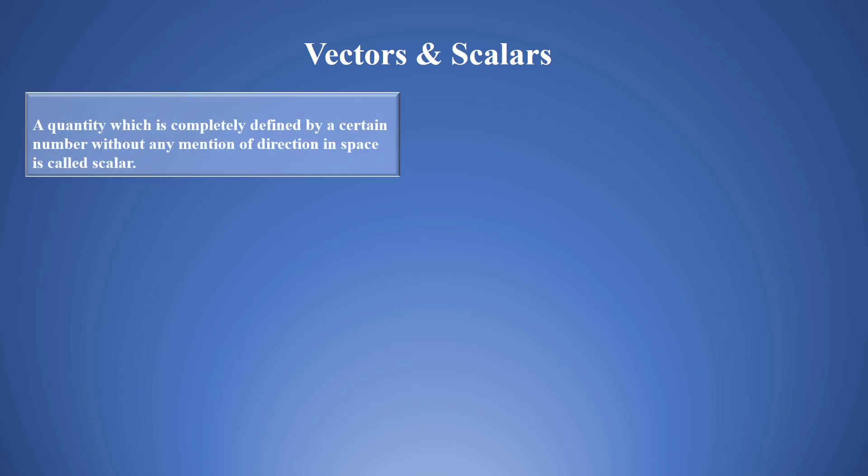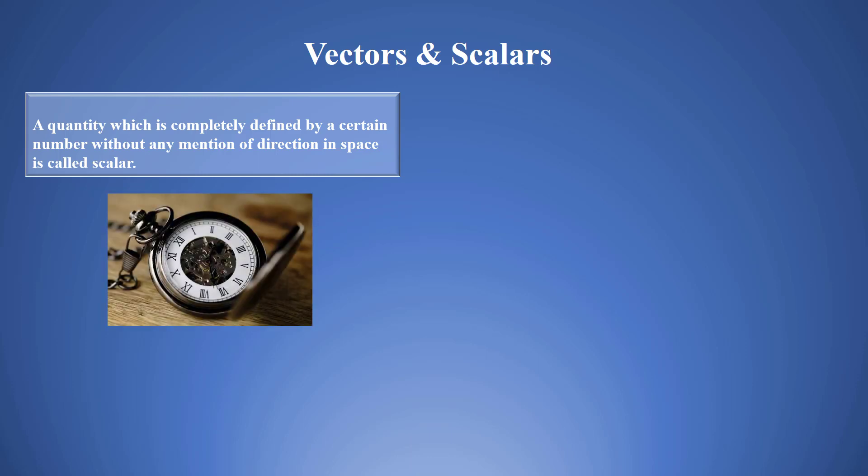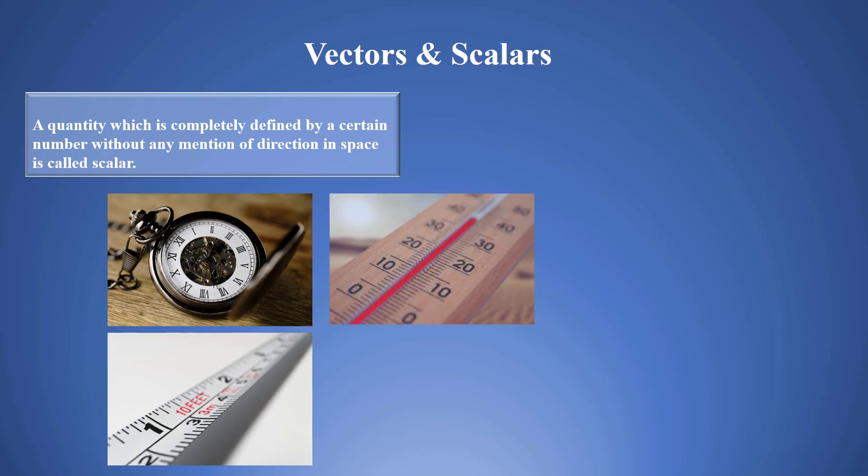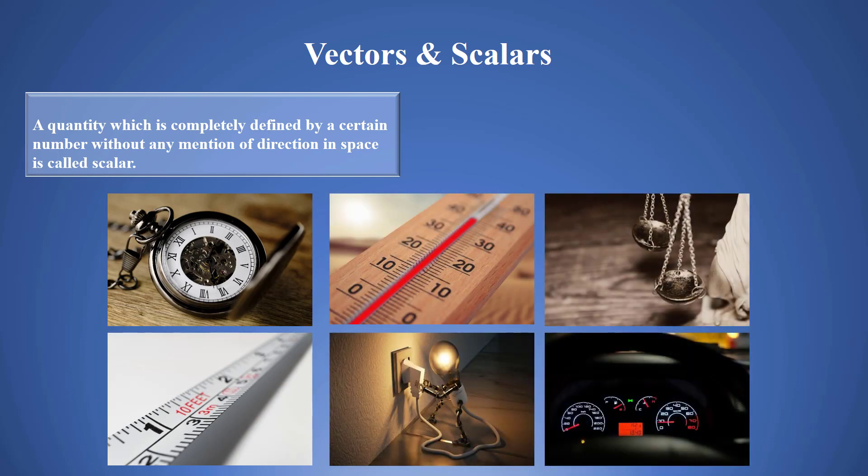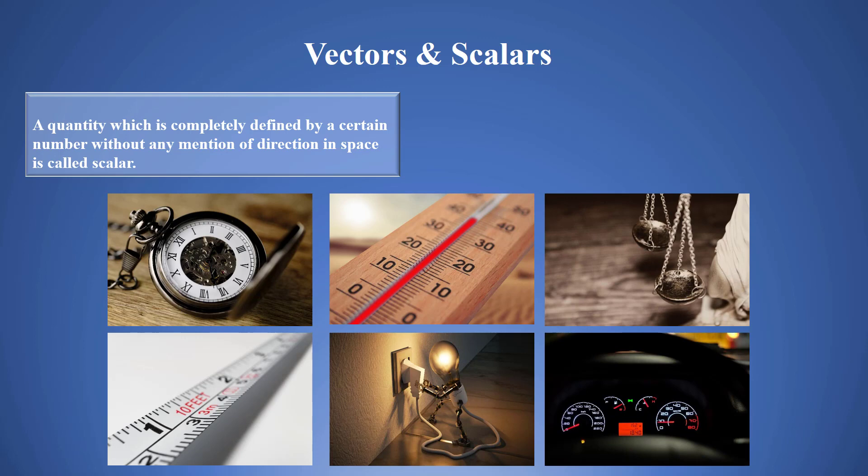...which is completely defined by a certain number without any mention of direction in space. Examples of scalars from our everyday life are time measurement, temperature, energy, mass, and speed. The number that describes a scalar quantity is called the magnitude. For example, when we say the mass is 6 kilograms, we are describing the amount of mass.